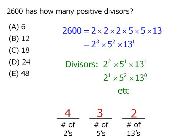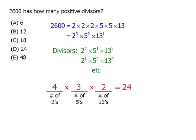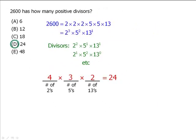So the total number of divisors will be the product: 4 times 3 times 2, which is 24. So our answer is D.